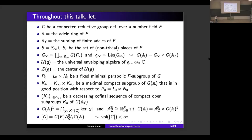Let U(g) be the universal enveloping algebra of the complexified Lie algebra g_infinity, and let Z(g) be the center of this universal enveloping algebra. Next, let us fix a minimal parabolic F-subgroup P_0 of G and its Levi decomposition, and use this choice to define standard F-parabolic subgroups of G. Moreover, let us fix a maximal compact subgroup K_A of G(A) that is in good position with respect to this choice of standard parabolic subgroups. We will denote by K_infinity the projection of K_A to G_infinity and by K_{A_F} the projection of K_A to G(A_F).